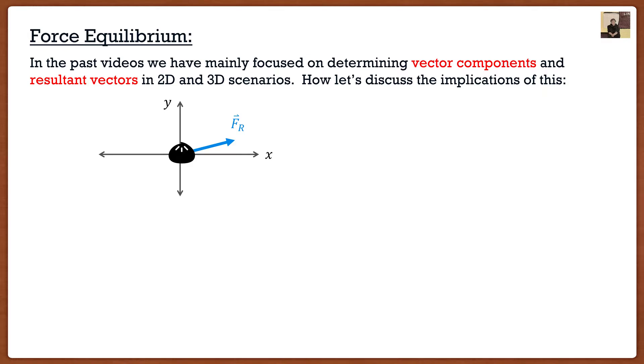Well, if an object has a non-zero resultant force on it, it's going to start to move. So what's going to happen is this bow, if it has a non-zero resultant force, it's actually going to start to move in the direction of that resultant force.